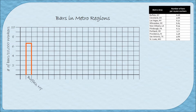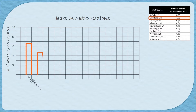I'll skip a space and next do the bar for Cleveland, Ohio. It's 4.66 — since 0.66 is a little more than a half, when I draw the height of the bar for Cleveland, Ohio I want it to be a little bit more than halfway between four and five. Then I connect it down to the horizontal axis and label it 'Cleveland, Ohio.' If you'd like to pause the video here you can create your bar graph, then unpause to check.